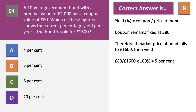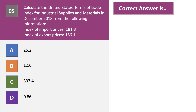Here's our final question in this set — question five. Calculate the United States' Terms of Trade Index for Industrial Suppliers and Materials in December 2018 from the following information. You're given data on the index of import prices and the index of export prices. What was the United States' Terms of Trade in that month? Have a go at question five.